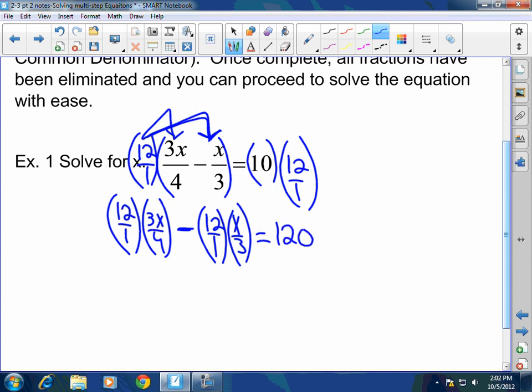Remember, this is what I'm doing in my head, but I'm going to show you what I'm doing in my head. I'm doing 12 over 1 times 3x over 4 minus, distribute, 12 over 1 times x over 3 equals 10 times 12, which is 120. Guys, what's 12 times 3 divided by 4? That's how I do that in my head.